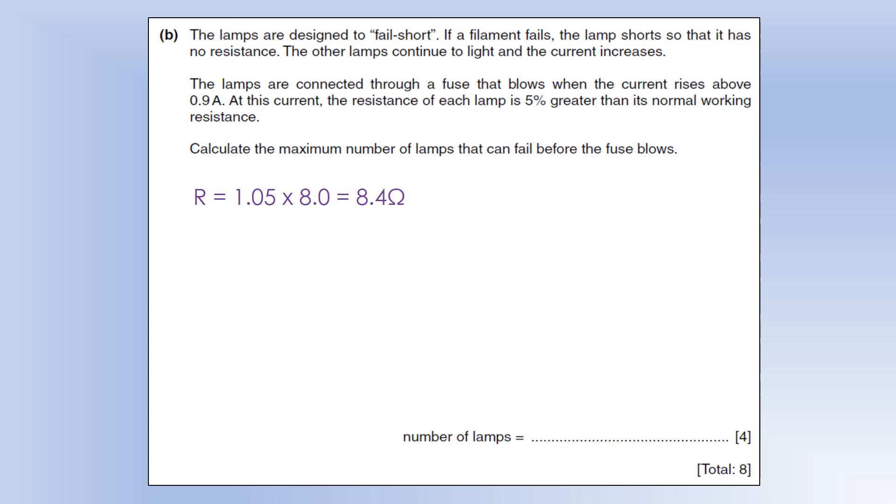What we can do first is calculate what the new resistance of one lamp is. It's 8.4 ohms, or 5% more than 8. We can also use V equals IR to figure out what the total resistance would be with 240 and a current of 0.9. This is what the resistance would be at failure.